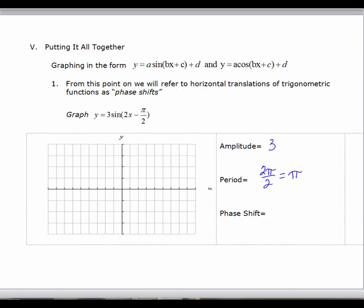The phase shift is going to be positive because we're subtracting pi over 2, but it's the amount of c over b, so it's pi over 2 divided by 2, which would be pi over 4. We have no vertical shift at all, and we are not being reflected because the sine of a is positive.